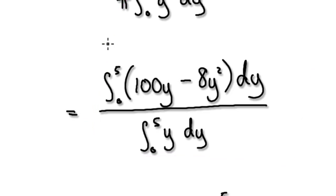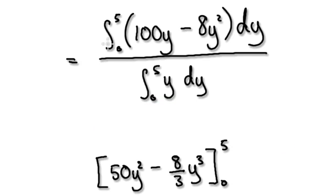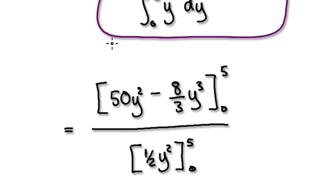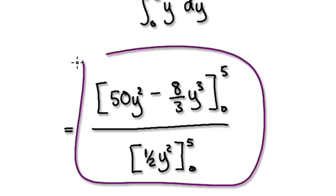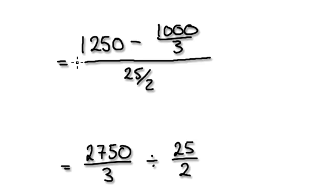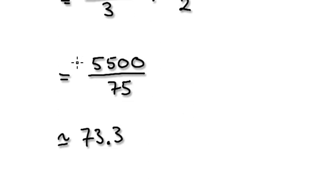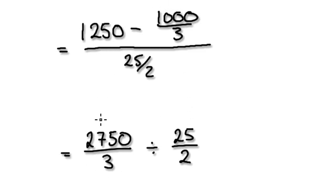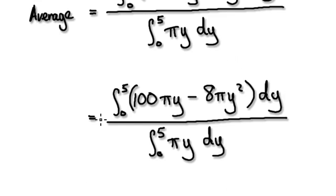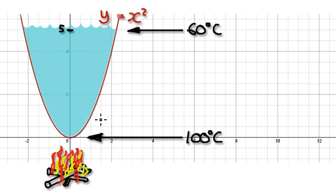Now it's just a matter of integrating. Integrate, then evaluate it, and it will give you an average temperature of 73.3 degrees Celsius. Going back to the diagram, 73.3 — so the average temperature is probably somewhere around here on the pot, which makes sense given the distribution.